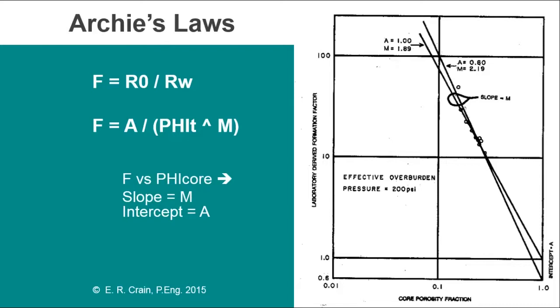Archie's data ended up giving us an A of about 0.62 for sandstones and an M of 2.15. Those are the world average default numbers widely used today. This particular data comes from a project I worked on many years ago, probably three thousand four thousand miles away from where Mr. Archie worked. Yet the slope of my line, 2.18 here, 2.19, and the M of 0.6 are awfully close to the world average numbers. So we're quite confident that we can use world average numbers when we don't have laboratory data in sands and shaley sands.